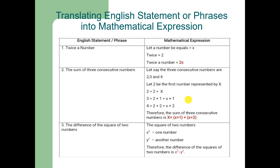Similarly, x plus (x+1) plus (x+2) is the mathematical expression of the English statement 'the sum of three consecutive numbers.' Let us suppose the three consecutive numbers are 2, 3, and 4, and let the first number be represented by x. Then 2 equals x, 3 equals x+1, and 4 equals x+2. So we may write the sum of the three consecutive numbers as x + (x+1) + (x+2).